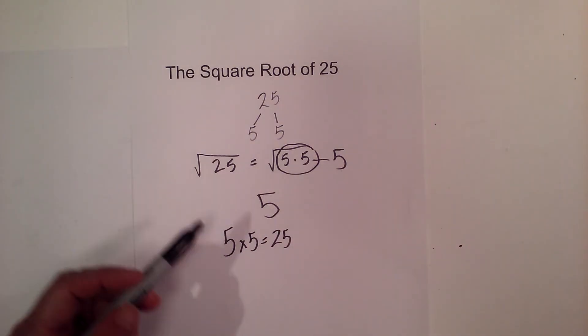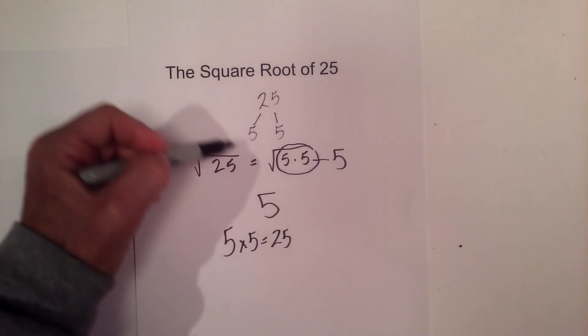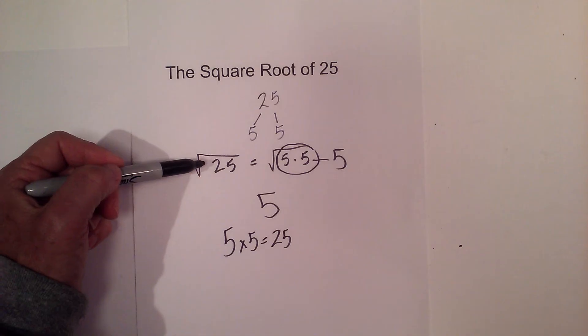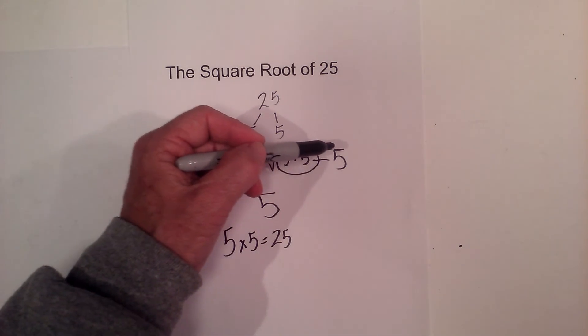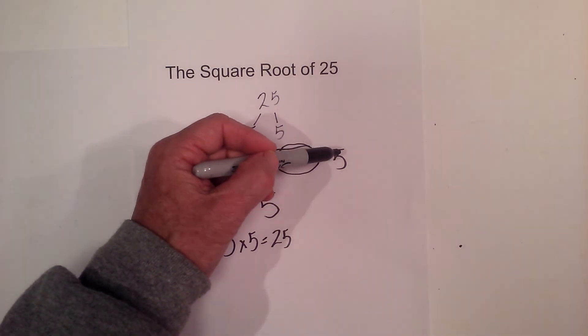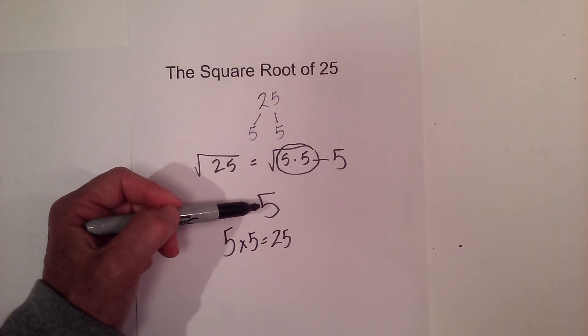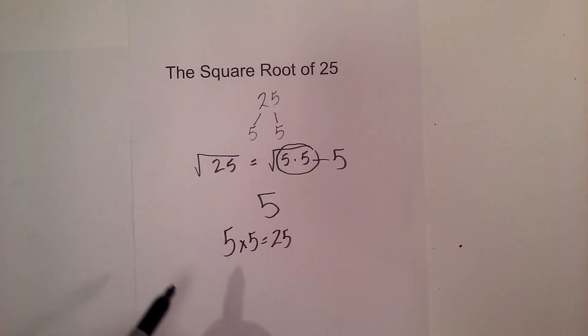So here we go. Again you can use a factor tree. You can rewrite the square root of 25 as 5 times 5. Pull out the pair since we have a square root. When you pull out the pair you only have one number and that is 5. So the square root of 25 is 5.